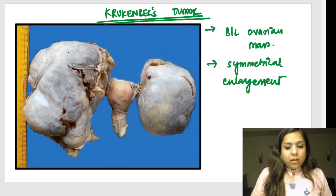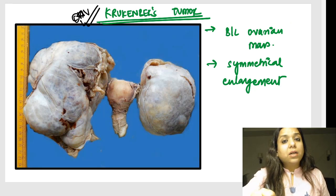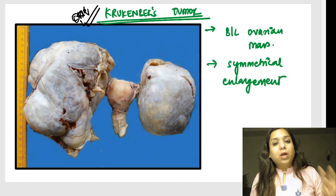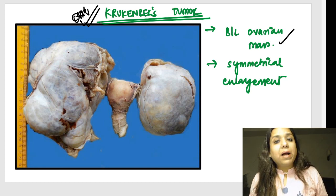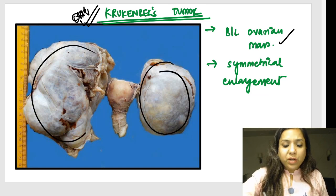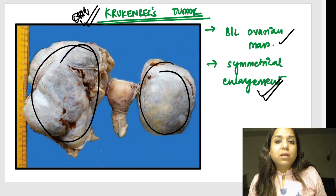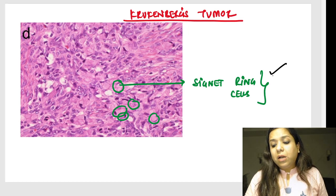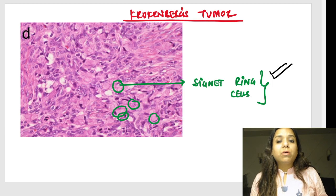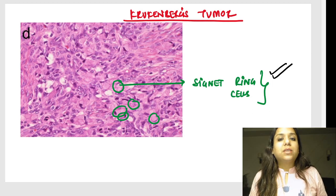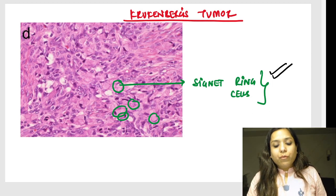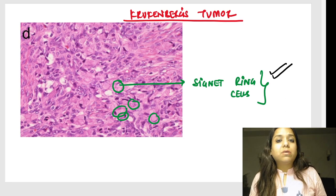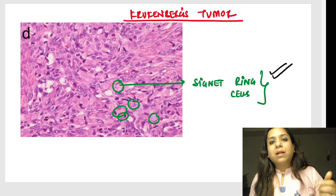Krukenberg's tumor has been asked in the INICET exam many times. Two important features: a bilateral ovarian mass with symmetrical enlargement, and microscopically a large number of signet ring cells. Krukenberg tumor is gastric adenocarcinoma metastasizing to the ovary — specifically the mucinous type, which shows signet ring cells due to intracellular mucin.